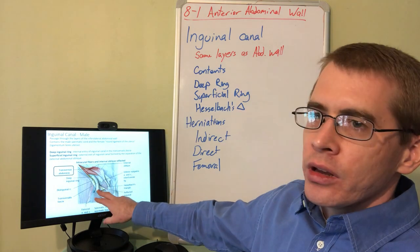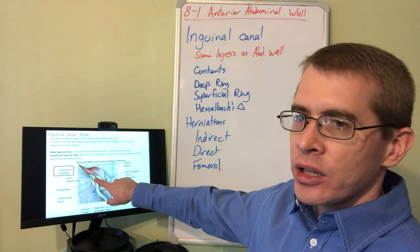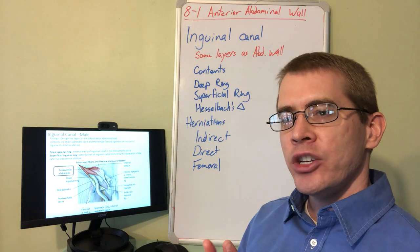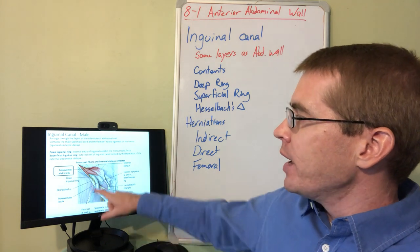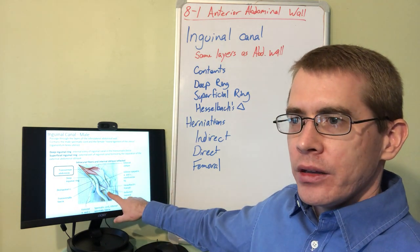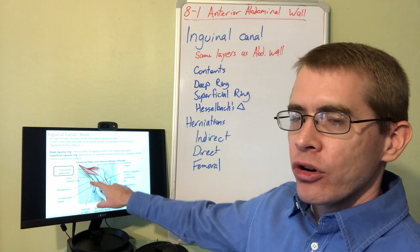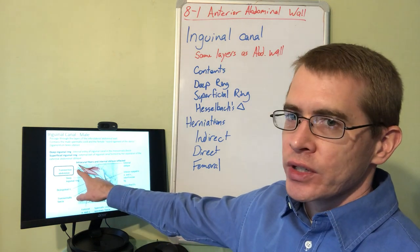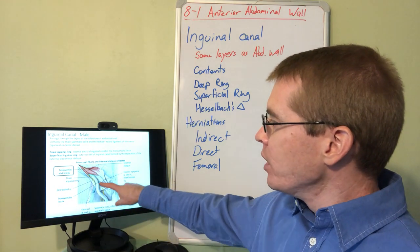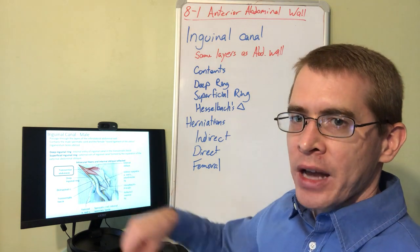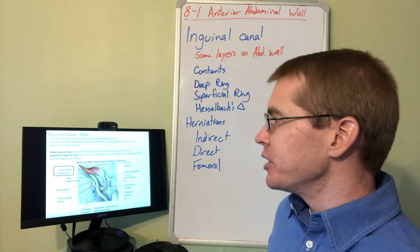Another important nerve to note in this drawing is the ilioinguinal nerve. The ilioinguinal nerve provides sensation to the medial portion of the thigh. It is a superficial nerve that travels through the inguinal canal without traveling through the deep inguinal ring — it only travels through the superficial inguinal ring, piercing the transversalis fascia more laterally and superiorly. It also travels outside of the spermatic cord, unlike the genitofemoral nerve.